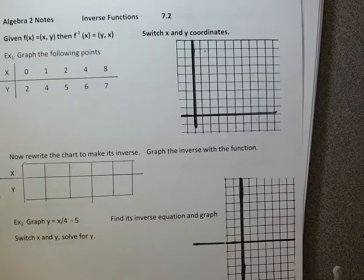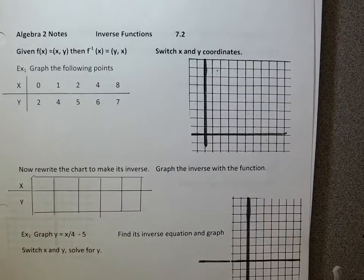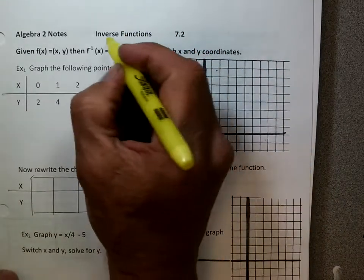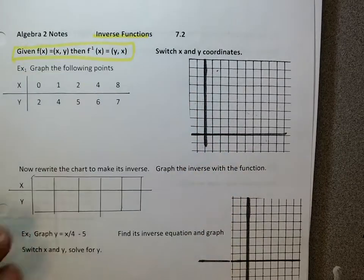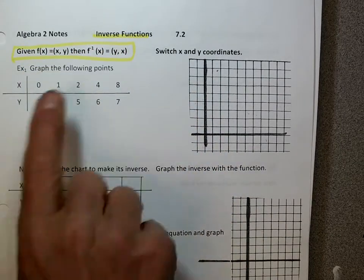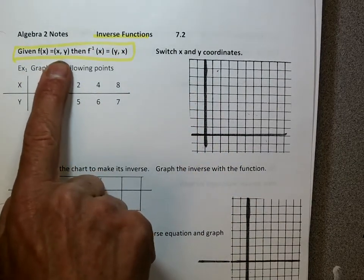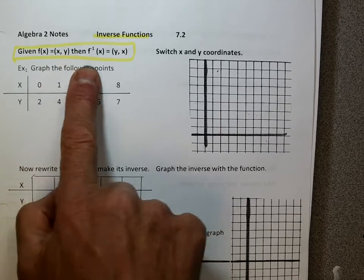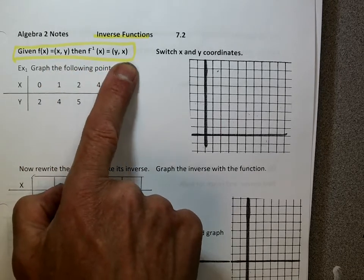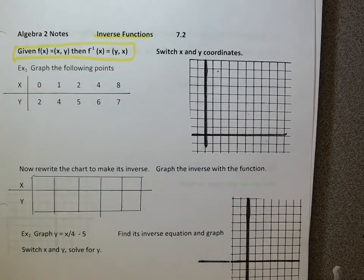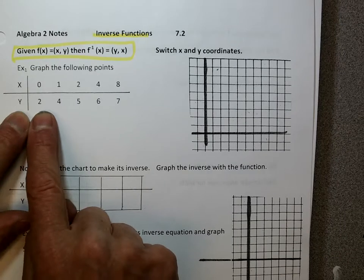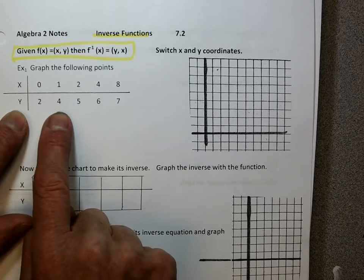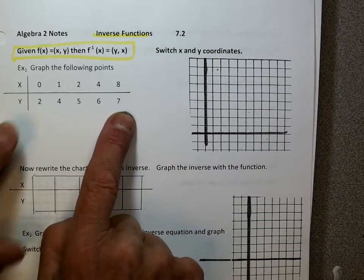Inverse functions. I've got f of x equal to some point (x, y), and its inverse — we just switch them around, we switch the x for the y and the y for the x. Example one has these points: (0, 2), (1, 4), (2, 5), (4, 6), and (7, 8).